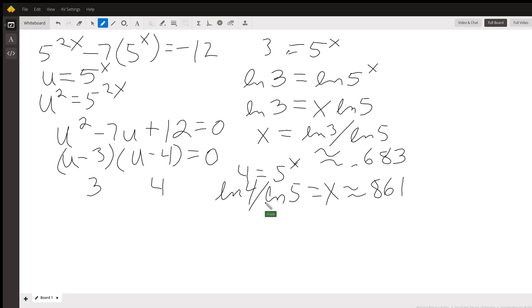So those are the answers. x is approximately 0.683, x is approximately 0.861. Trying to get that dot in front of it. It doesn't want to draw a dot. And the exact answers are log of 3 over log of 5 and log of 4 over log of 5.